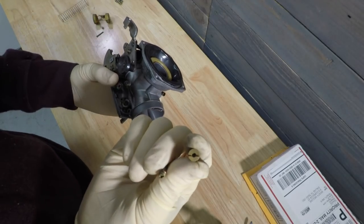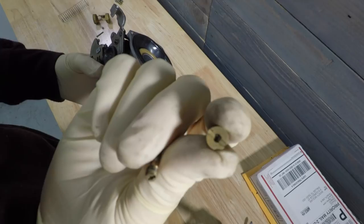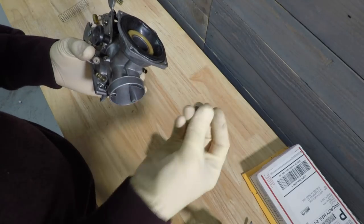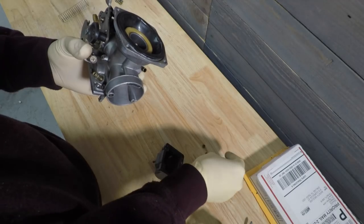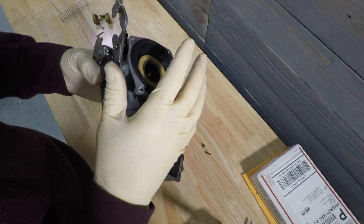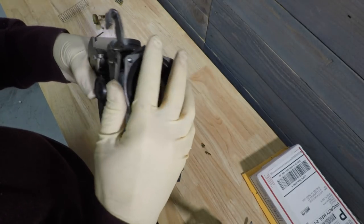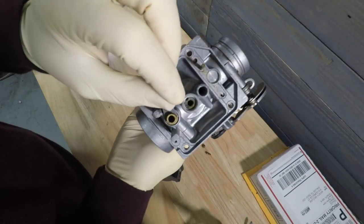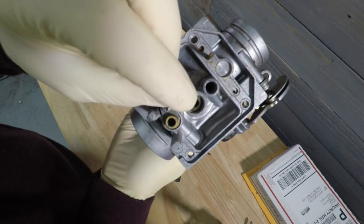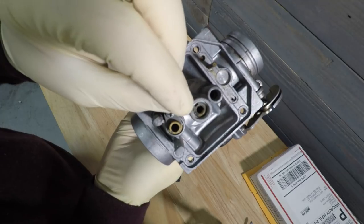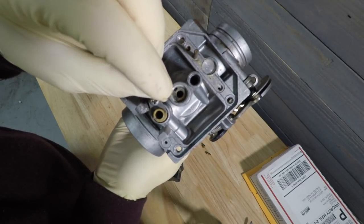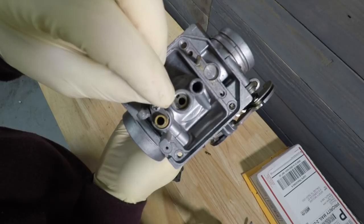This is the main jet in this carburetor. This is the idle jet. And there's another jet called the needle jet, which is in this center hole. And I'm not going to remove it because it's not necessary to be removed. We'll clean it, but it's not necessary to be removed in this case.